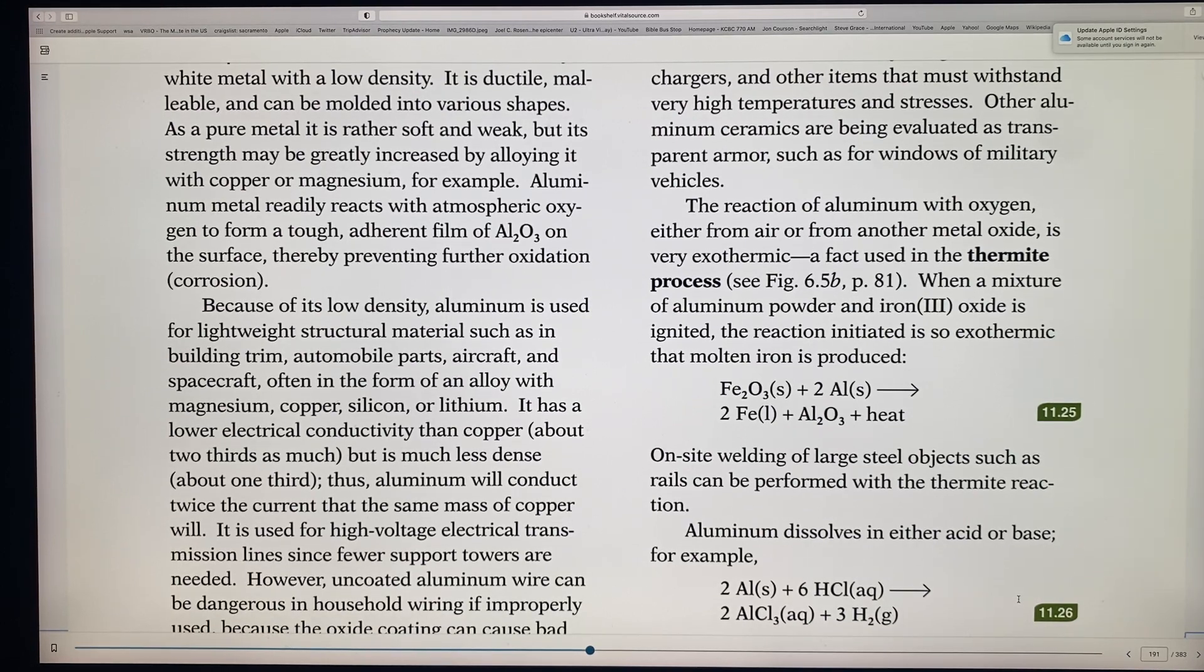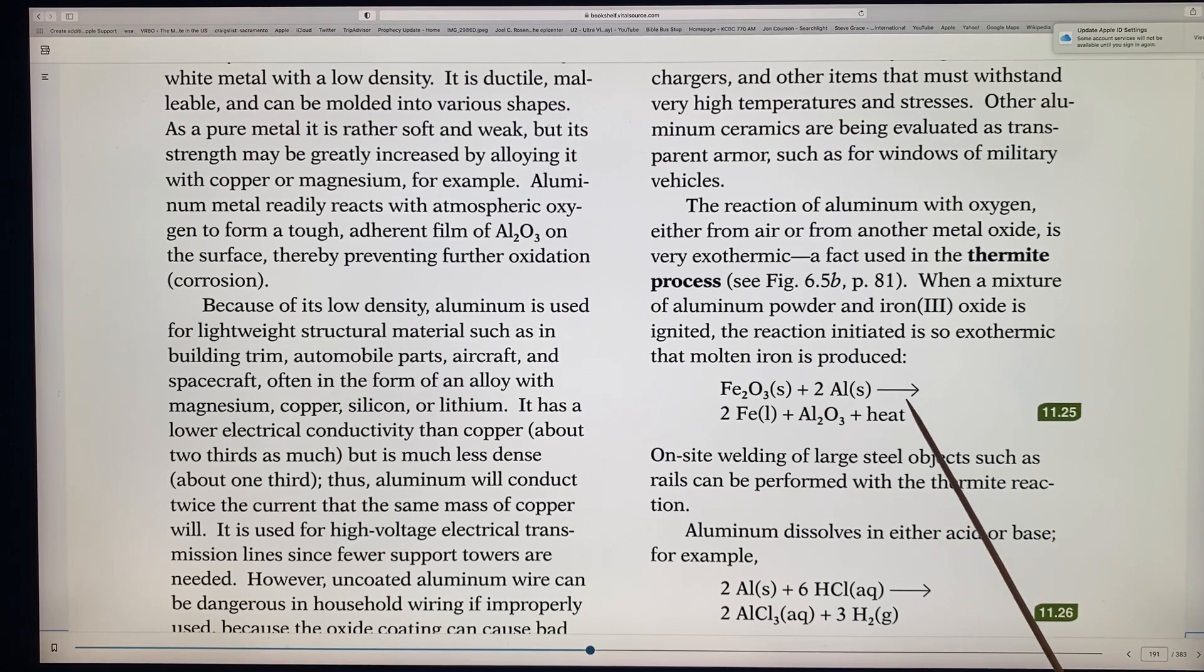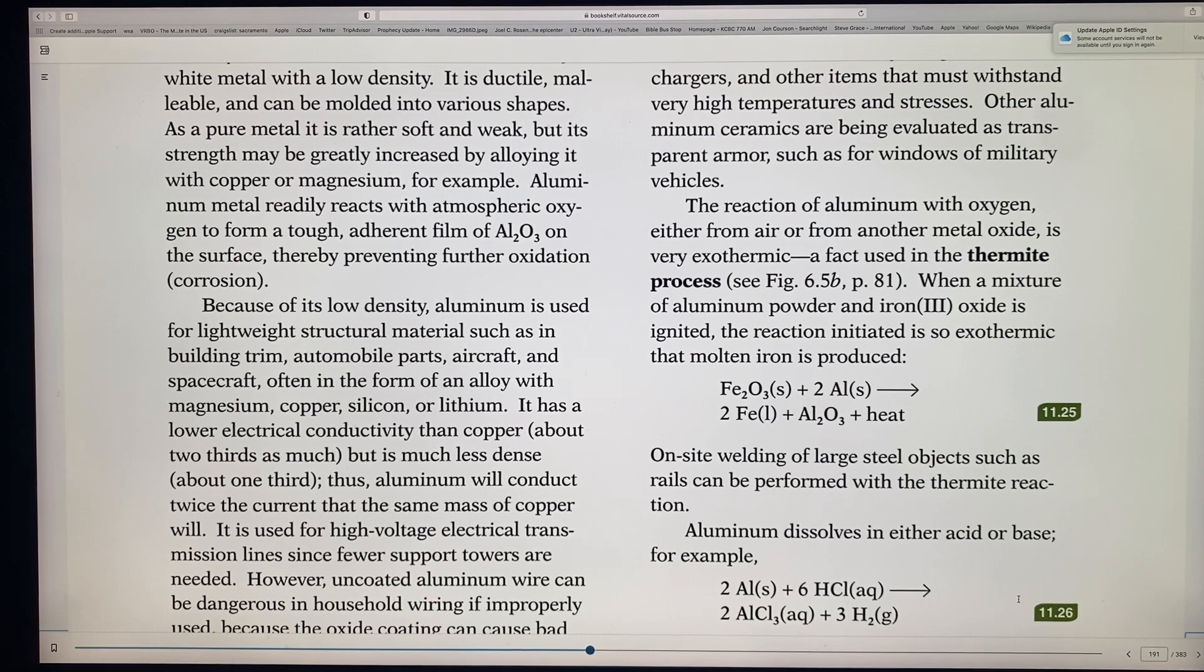Now the reaction of aluminum with oxygen is very exothermic and in fact they call it the thermite process. So when we say exothermic means that it produces a lot of energy and a lot of heat, right? And so this mixture of aluminum powder and iron oxide is so exothermic that the molten iron is produced. It makes the iron basically melt because it is so exothermic. Here's the equation here for it produced with iron oxide with aluminum combined. And as it's combined, it produces the iron and then that aluminum oxide plus tons of heat. So tons of energy. In fact, they use it for things like welding steel rails because of the heat in the midst of it.